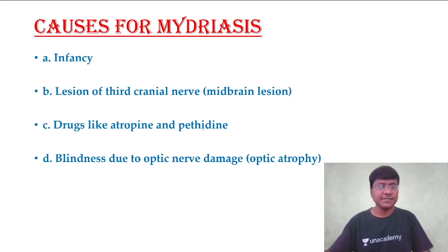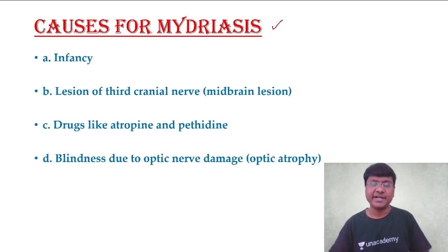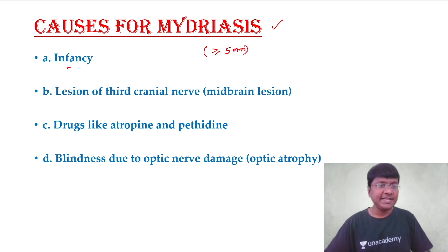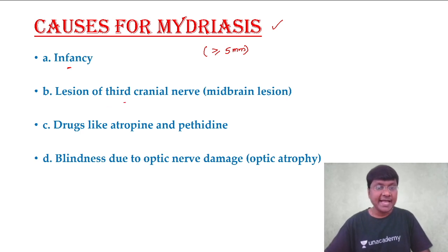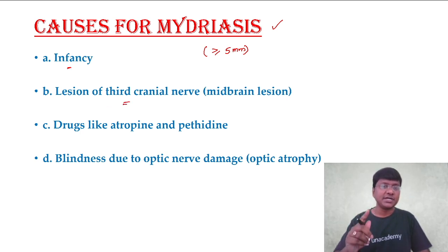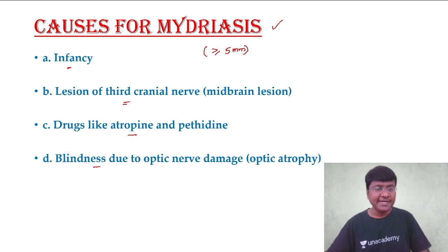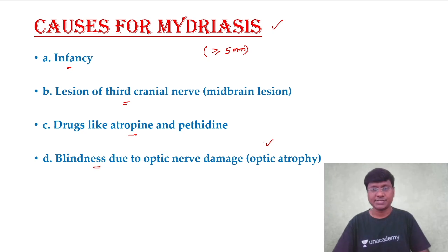Conditions where you have mydriasis — dilatation of the pupil to size more than or equal to 5 mm — include: physiological mydriasis in infants, lesion to the third cranial nerve (midbrain lesion), drugs like atropine and pethidine due to their anti-cholinergic action, and blindness due to optic nerve damage such as optic atrophy.